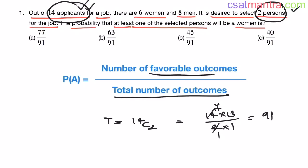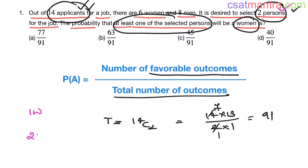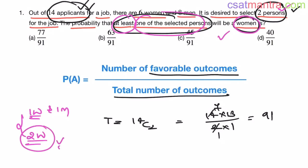Now, number of favorable outcomes — we want at least one of the selected persons to be a woman. That means among the two selected persons, we can have one woman (and the other person a man), or both persons as women. These are the two cases possible.